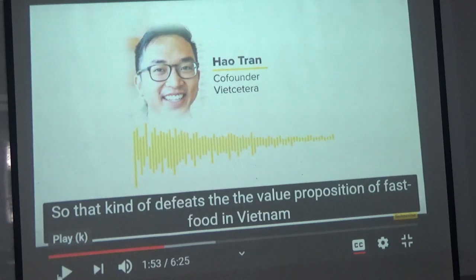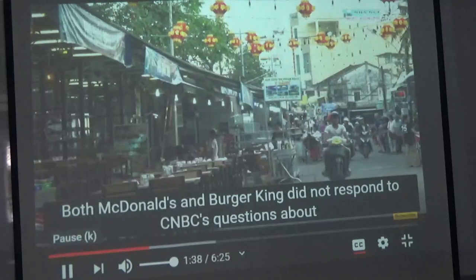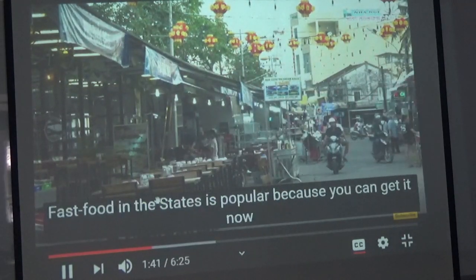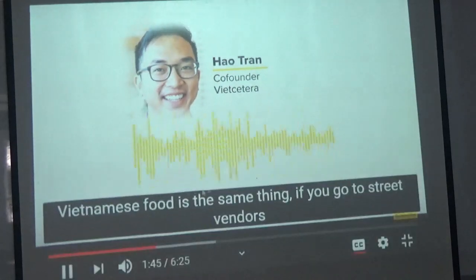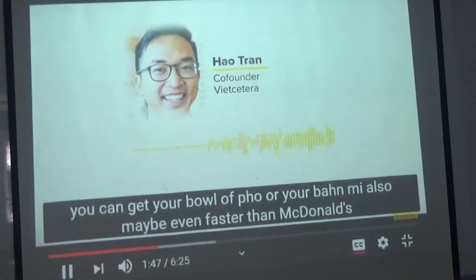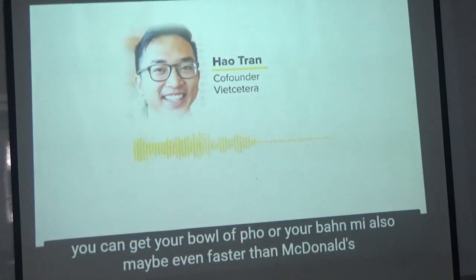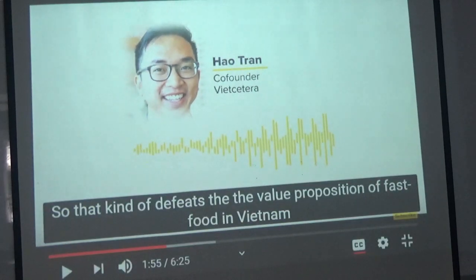A market researcher from Vietcetera explained: fast food's value proposition is speed, but Vietnamese street food offers the same convenience. You can get pho or banh mi just as fast from a street vendor as from McDonald's. So one of the key bonuses of fast food is lost in Vietnam because we already have so much street food and quick options. Let's talk about value proposition — it's similar to competitive advantage; it's what the customer feels they get from you.